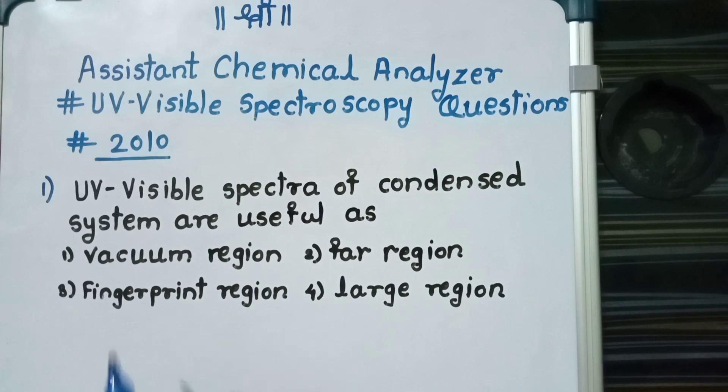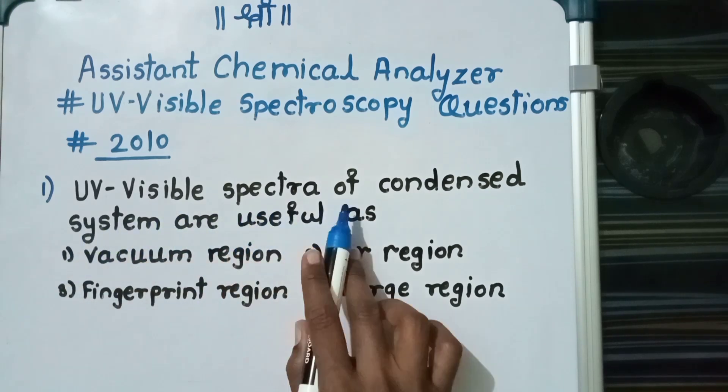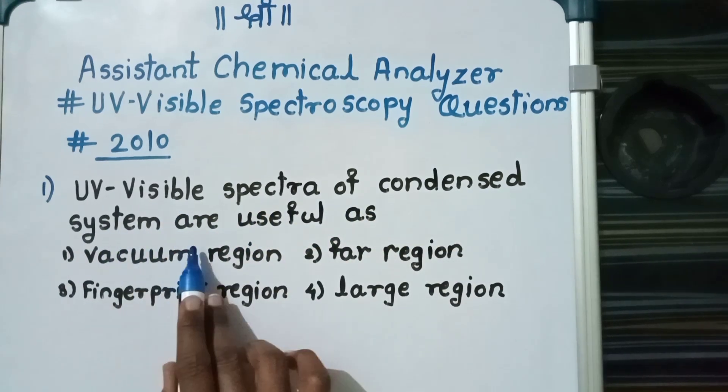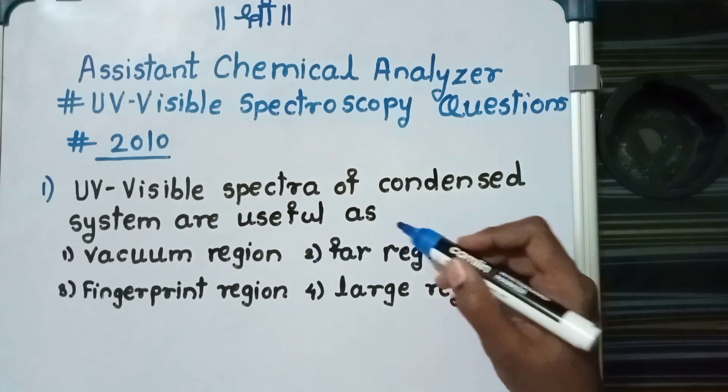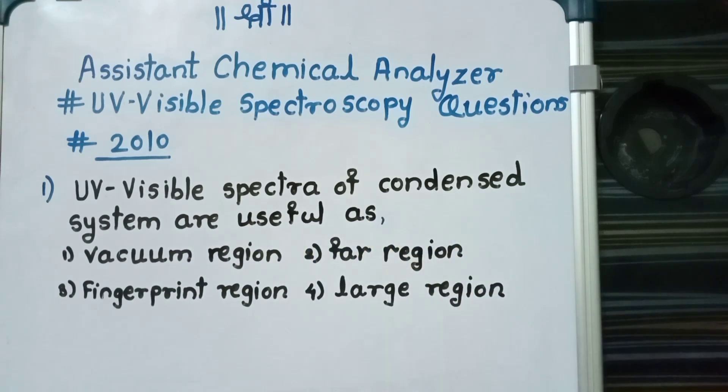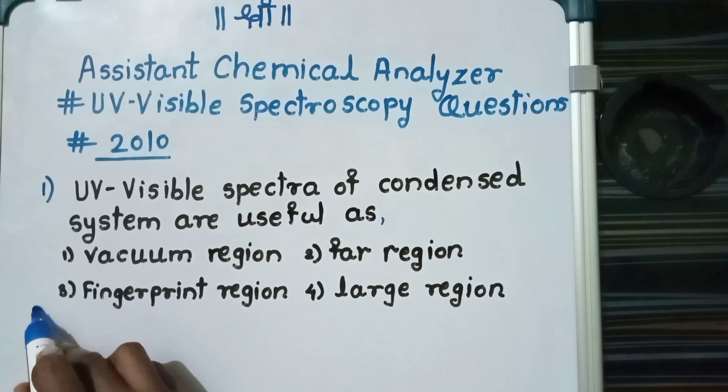The question is that UV-visible spectra of condensed system are useful as, and the answer to this question is the fingerprint region.